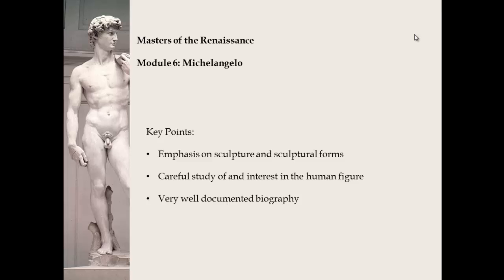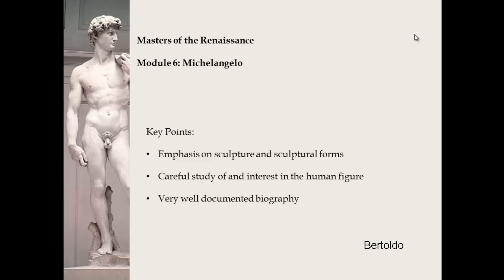One important thing to know is that Michelangelo was first apprenticed in a painting workshop. He was in the workshop of Domenico Ghirlandaio between 1486 and 1488, and probably helped with some of Ghirlandaio's executed works in Florence you can still see today. In 1489, he went to the Medici Sculpture Garden and trained with the sculptor Bertoldo, who was a student of Donatello. Throughout his life, Michelangelo would claim he had no teachers and trained himself, but we know that is not the case.